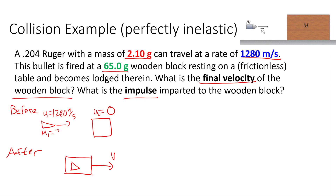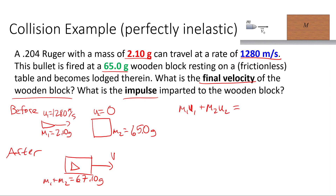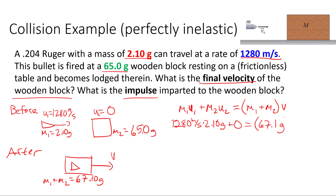M1 is 2.10 grams, M2 is 65.0 grams. The combined mass M1 + M2 equals 67.10 grams. Using conservation of momentum for a perfectly inelastic collision: M1·U1 + M2·U2 = (M1 + M2)·V. Plugging in: 1280 m/s times 2.10 grams plus 0 equals 67.1 grams times V, since the block's initial speed is zero.